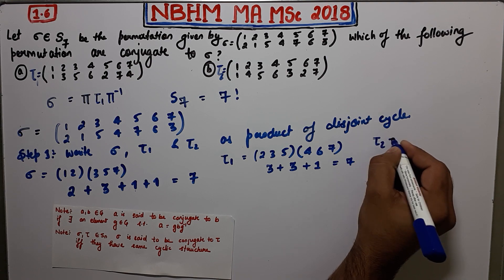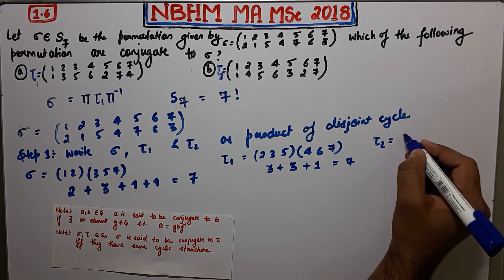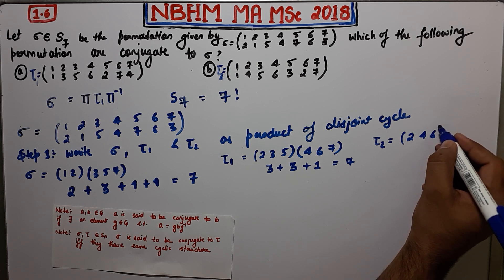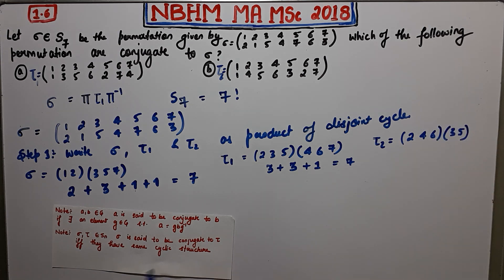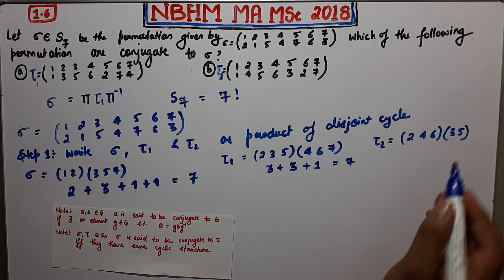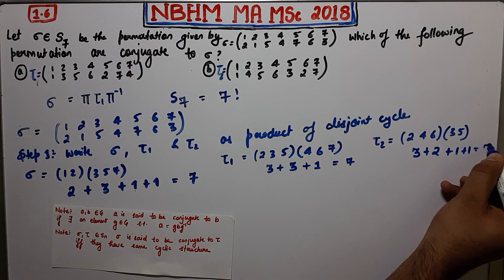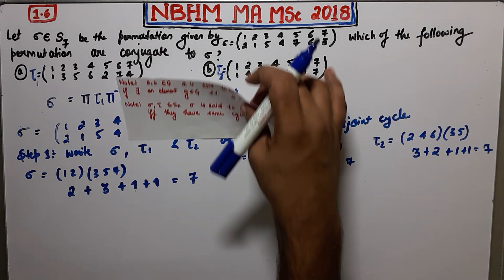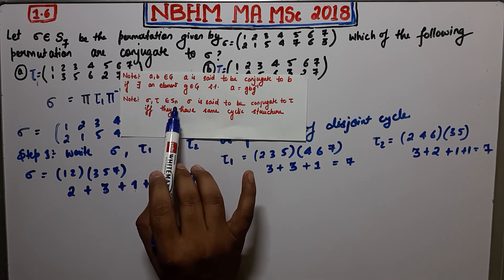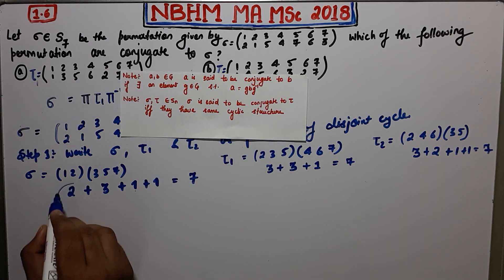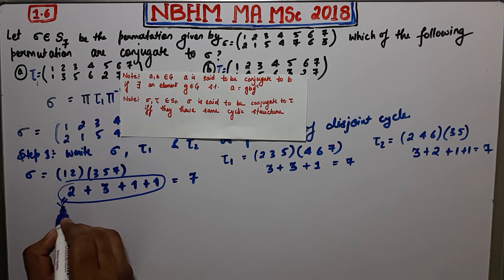Next, let us decompose τ2. Writing τ2 as a product of disjoint cycles gives (2 4 6)(3 5), and elements 1 and 7 are both fixed. So the cyclic structure of τ2 is 3 + 2 + 1 + 1, which is a decomposition of 7.